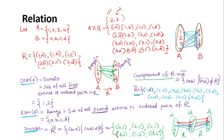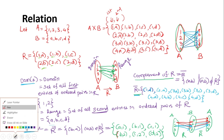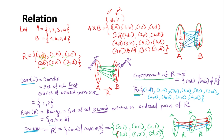Range is the set of all second entries in your ordered pairs of relation R. Here all the second entries in R are A, B, C, B, C, D — so the range is {A, B, C, D}. Inverse is exactly the opposite: you reverse the order of each ordered pair.